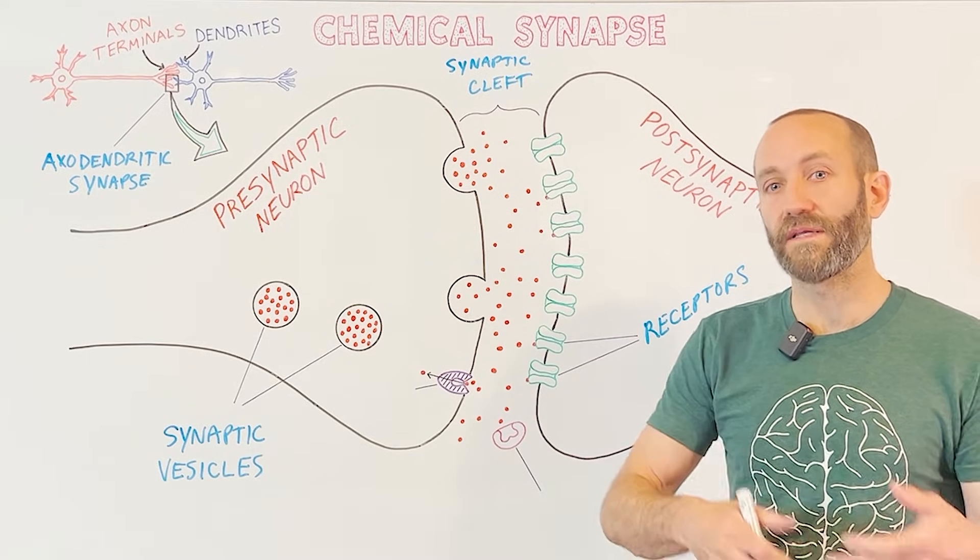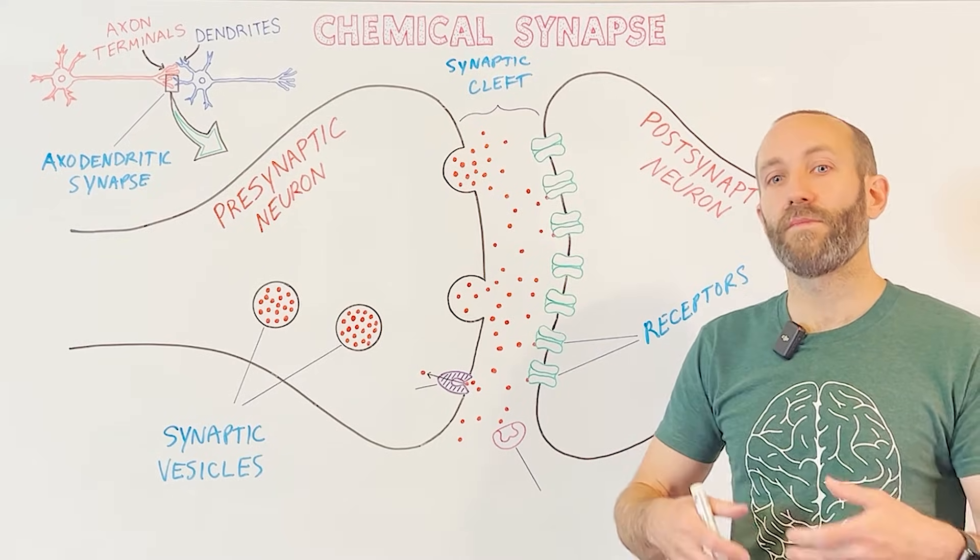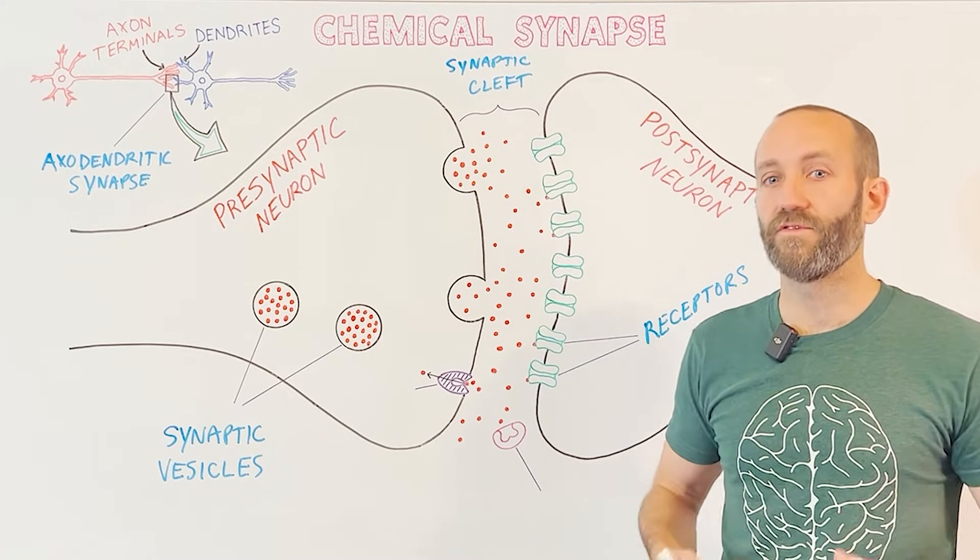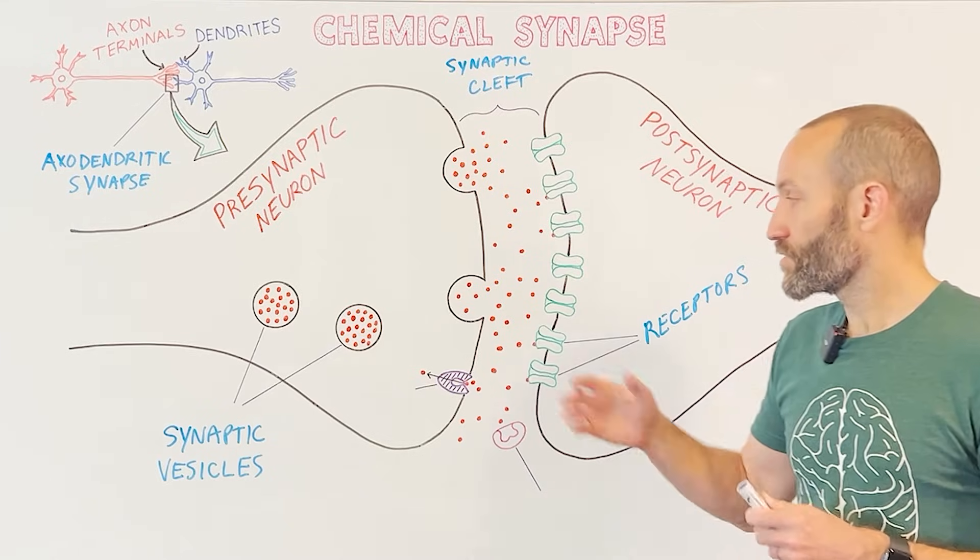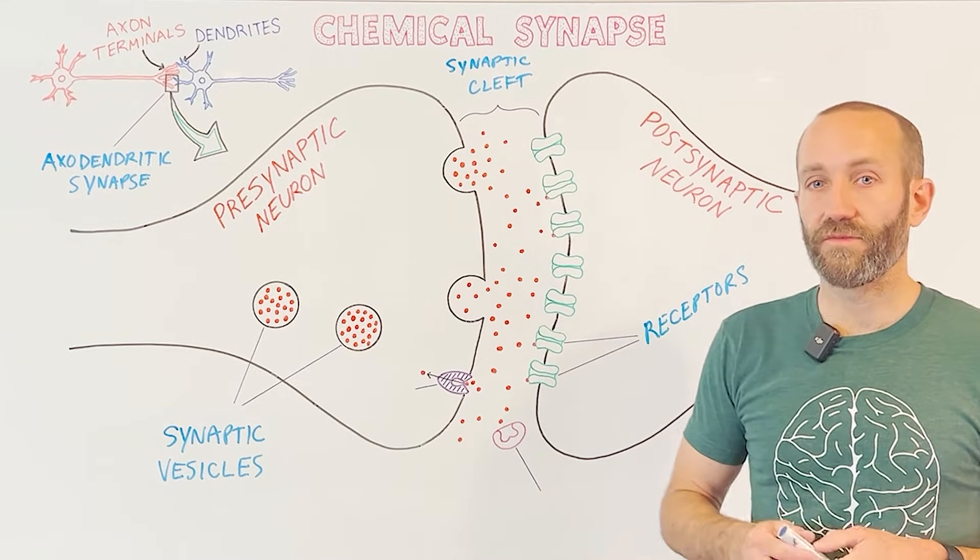This would prevent further signals from getting through and disrupt the functionality of the synapse, which in many cases needs to be able to go through another round of neurotransmitter release and binding rapidly after the last round. So a critical aspect of synaptic transmission is the removal of neurotransmitters from the synaptic cleft.